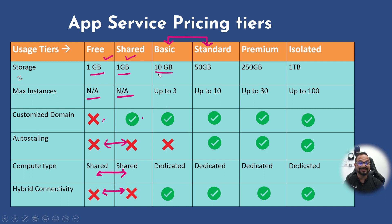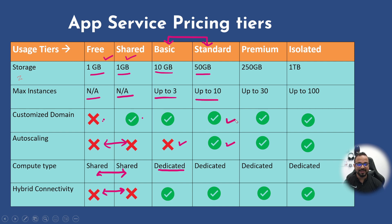The Basic plan provides 10 times more storage than the Free or Shared plan and comes with support of up to three instances, but it does not support auto scaling. It runs on dedicated hardware. Comparing Basic and Standard: the Standard plan has 50 GB of storage and supports up to 10 instances. It supports auto scaling, custom domains, and also runs on dedicated compute.